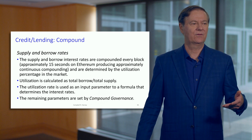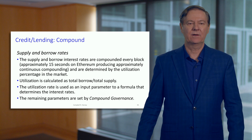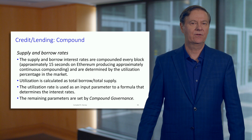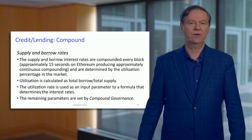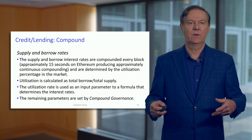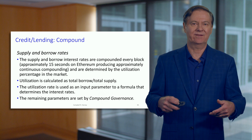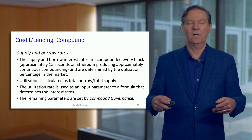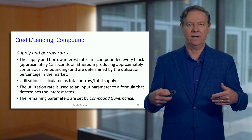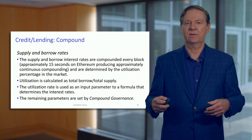In traditional banking, you might have a daily compounded rate, but here you're compounding every 15 to 18 seconds. An important term is utilization — the amount of borrowing relative to the amount of supply. You can never borrow more than the supply, so the utilization rate is literally the amount borrowed divided by the supply, and it plays an important role in this protocol.